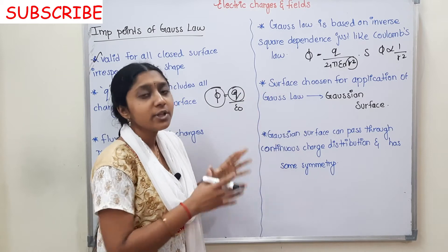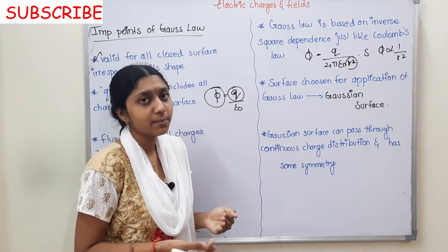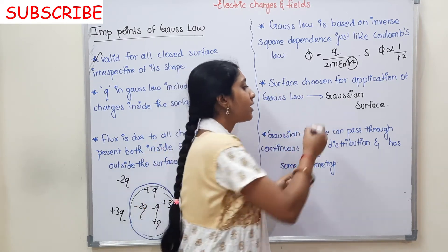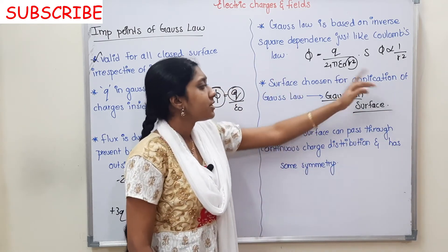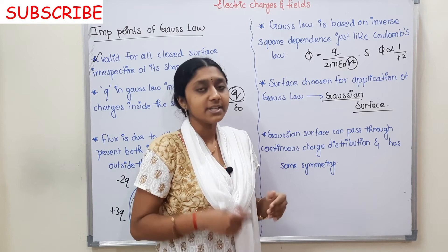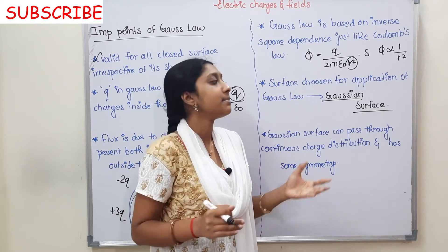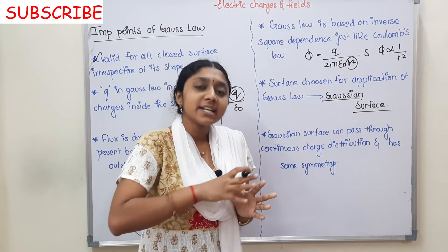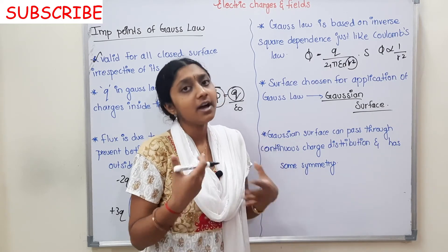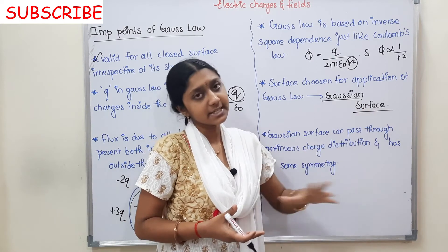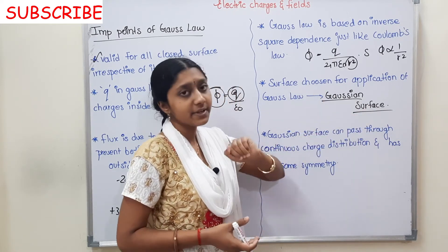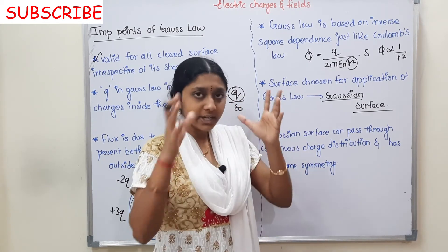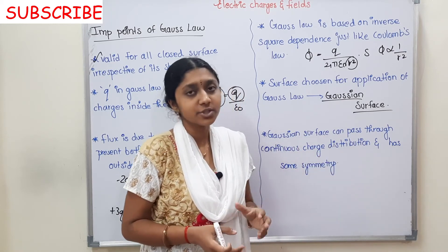Next, Gauss's Law applications. What is the Gaussian surface? The Gaussian surface is the surface chosen to apply Gauss's Law — for example, a cylinder or a plane sheet. The Gauss's Law application uses a Gaussian surface with a symmetrical shape, and it is used for continuous charge distribution.